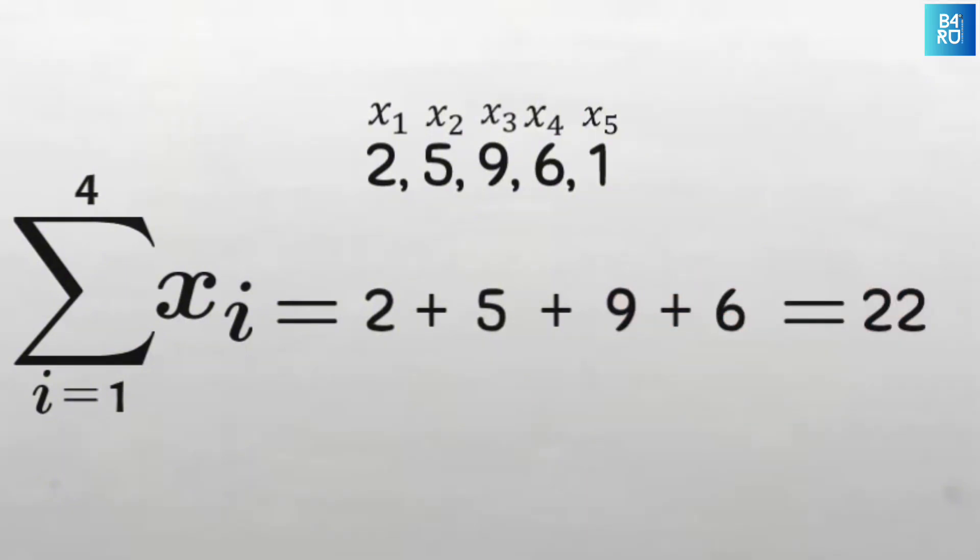Let's try another example. The summation from i equals 1 to 3 of x sub i for this same data will be x sub 1 that's 2 plus x sub 2 that's 5 plus x sub 3 that's 9, and so 2 plus 5 plus 9 is 16. Nice.